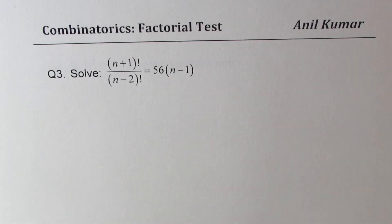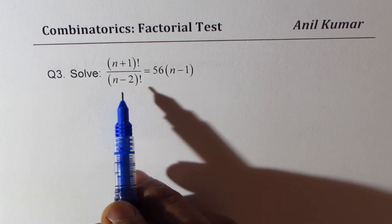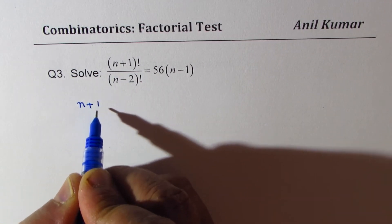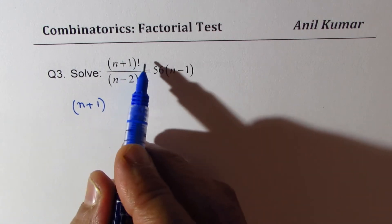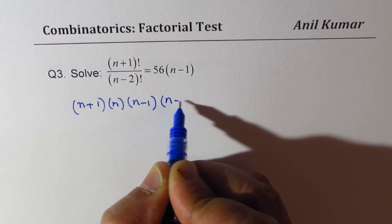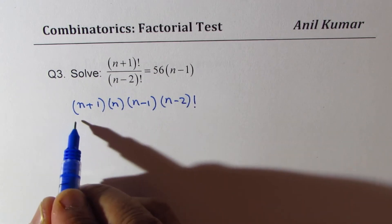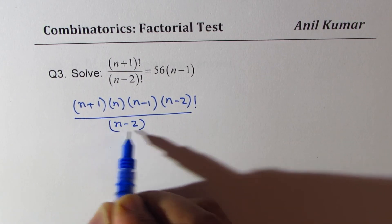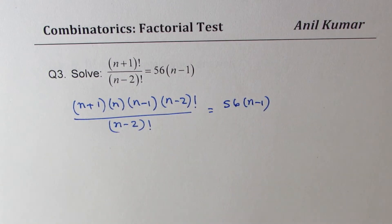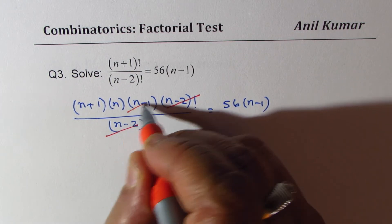Let's move on to question number three, which is to solve the equation. We will simplify the left side: n plus 1 factorial can be written as n plus 1 times n times n minus 1 times n minus 2 factorial, divided by n minus 2 factorial, equal to 56 times n minus 1. The n minus 2 factorials cancel, and n minus 1 also cancels.